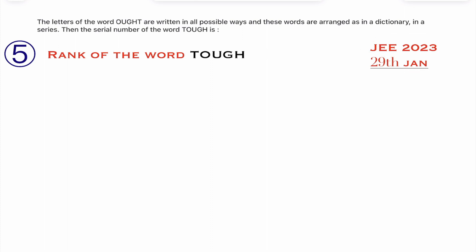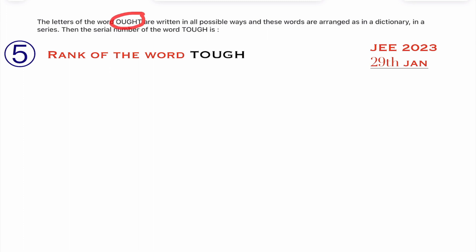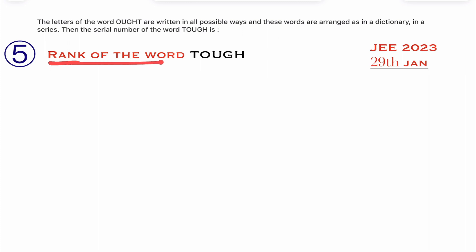The question is: the letters of the word TOUGH are written in all possible ways — that means all the letters of the word are arranged in dictionary order. They are asking for the serial number of the word TOUGH. This is nothing but finding the rank of the word TOUGH.